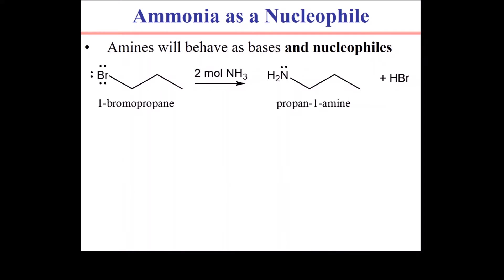Making amines seems like a straightforward nucleophilic reaction. Ammonia is a good nucleophile, alkyl halides are a common electrophile, and the nitrogen can participate in a backside SN2 attack and bump off the bromide. A couple of problems occur. First, two moles of ammonia are required because something has to come along and deprotonate this nitrogen after it pushes off the bromide. And the product is also a nucleophile, so this is not a very effective way of producing amines.